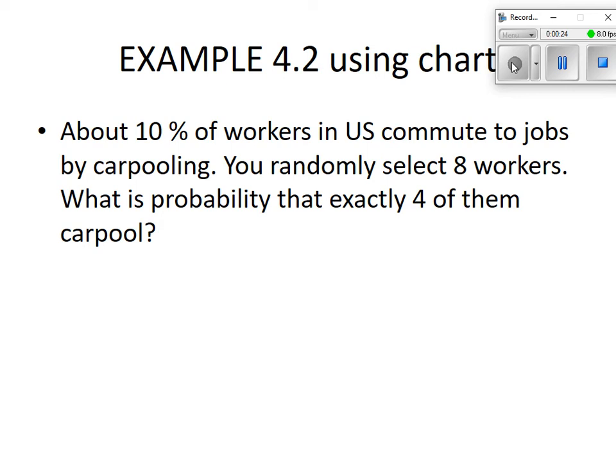About 10% of workers in the U.S. commute to jobs by carpooling. You randomly select eight workers. What's the probability that exactly four of them carpool? The only reason I put this example on here is so that we could use the chart. I don't remember if we did this or not the other time we went over this, but we're going to do it now. If you turn to the third page of the chart where it says binomial distribution, that's what we were doing previously, before the notes that we're going to cover today that we've already covered.